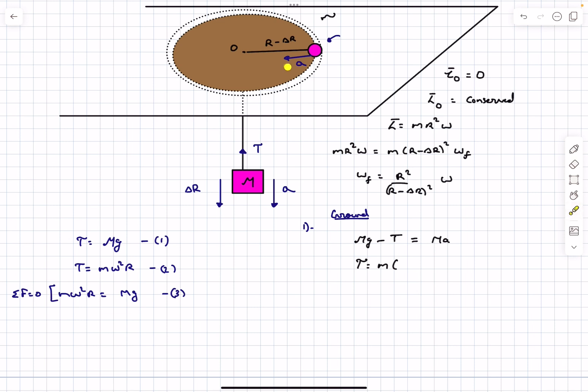Now the acceleration would have two components: one is a itself, and then it will also have an additional term of R omega squared as it is moving in a circle. So the acceleration would be a plus (R minus delta R), because that's the new radius of the orbit, times the omega final squared.